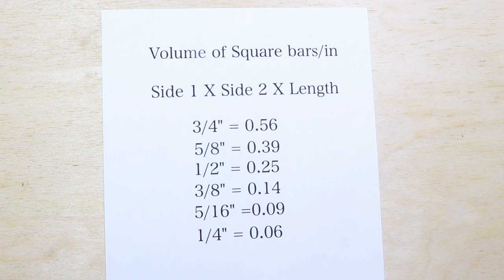I always start out by making a list of the volumes per inch of the starting bar stocks and the dimensions of the finished bar stocks that are going to wind up in the forging. What you see here is a list of the volumes of all the common square bars that you're likely to be using.